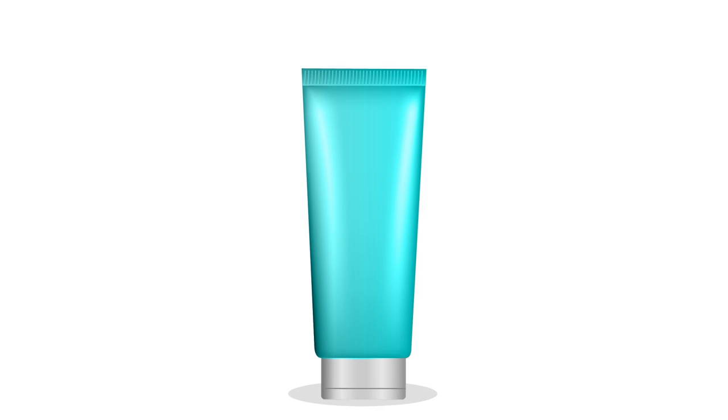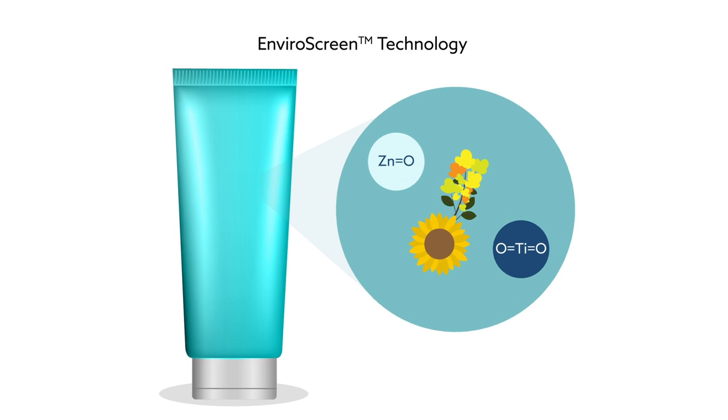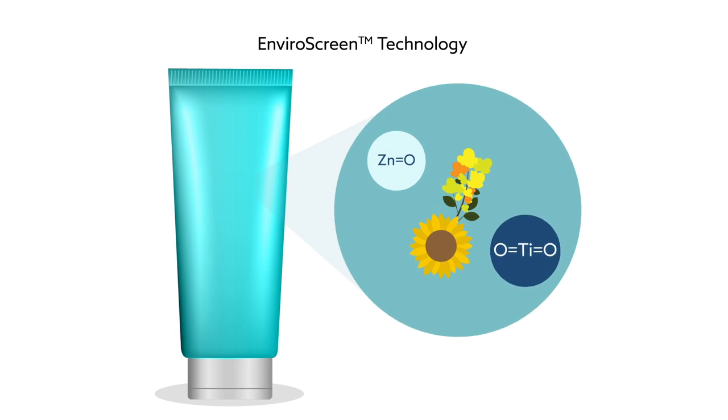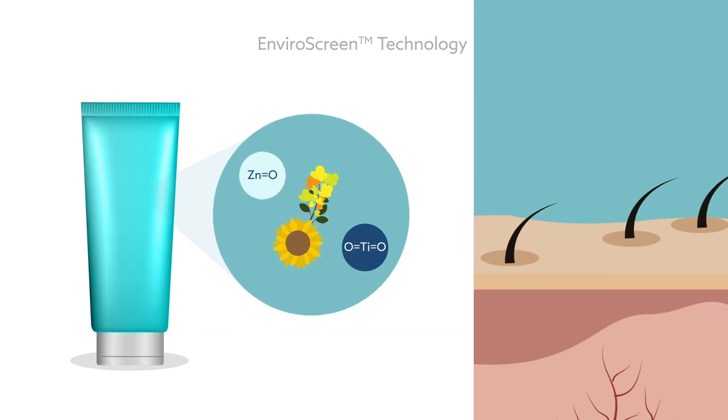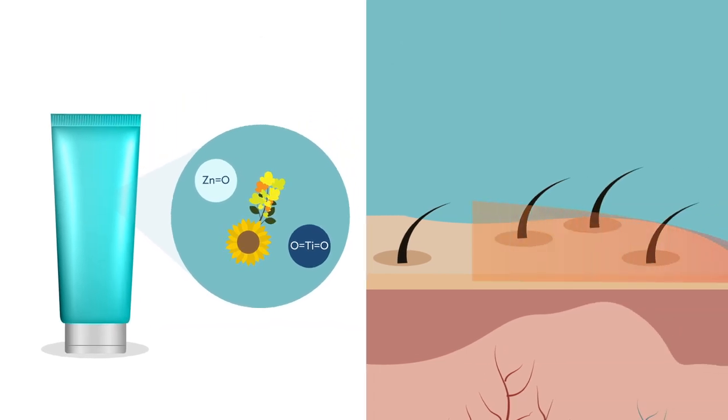Now, scientists have formulated an all-in-one solution using patented EnviroScreen technology. A blend of naturally-derived sun-blocking mineral particles, botanicals, and antioxidants, this new mineral sunscreen technology offers virtually all the protection the skin needs, while nourishing and hydrating the skin.